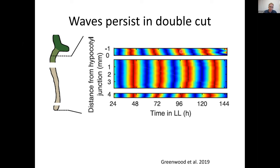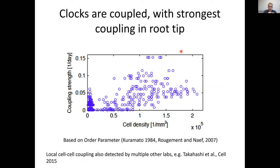The first question we wanted to address was: do you need a long-distance signal from one part of the plant to another to generate these spatial waves? Mark tried cutting the plant into different parts to see if we could affect the wave. When the hypocotyl was cut away from the top of the root, and the root tip cut away from the hypocotyl, the wave still continues through the separated pieces of tissue. So it doesn't seem that we need a long-distance signal to generate these waves. However, there does appear to be evidence of local clock coupling — cells close to each other become more similar in their rhythms over time, especially in regions with high cell density such as the root tip.